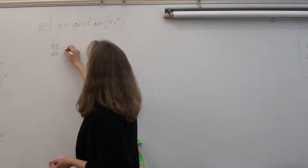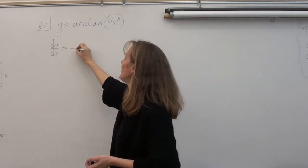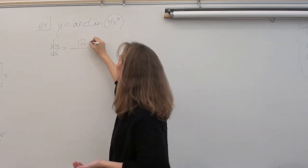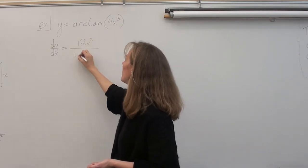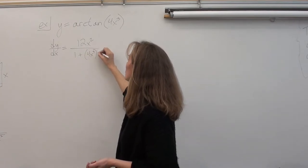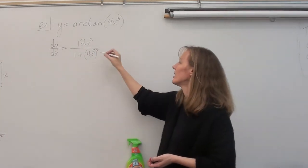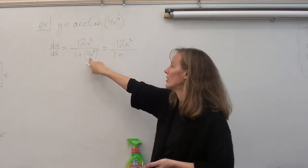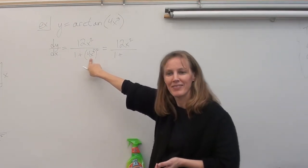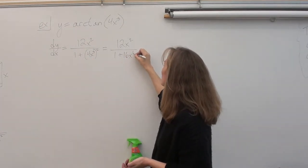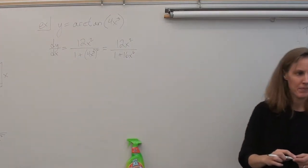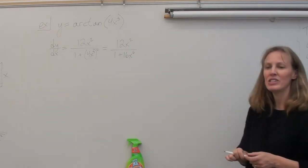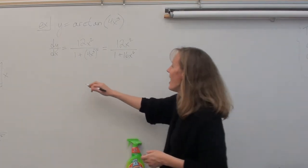All right, so, dy dx equals, remember, for all of these, the derivative of the argument goes on top. So, what's on top? 12x squared. On the bottom for tangent is 1 plus the argument squared, right? And you can leave it like this. However, if it's a multiple choice, it'll probably be squared out. And what would 4x cubed squared be? 16x to the 6th. Okay, does that make sense? Yes, it does, doesn't it? All right, let's do it the long way. Yay! Yay, long way. Here we go.